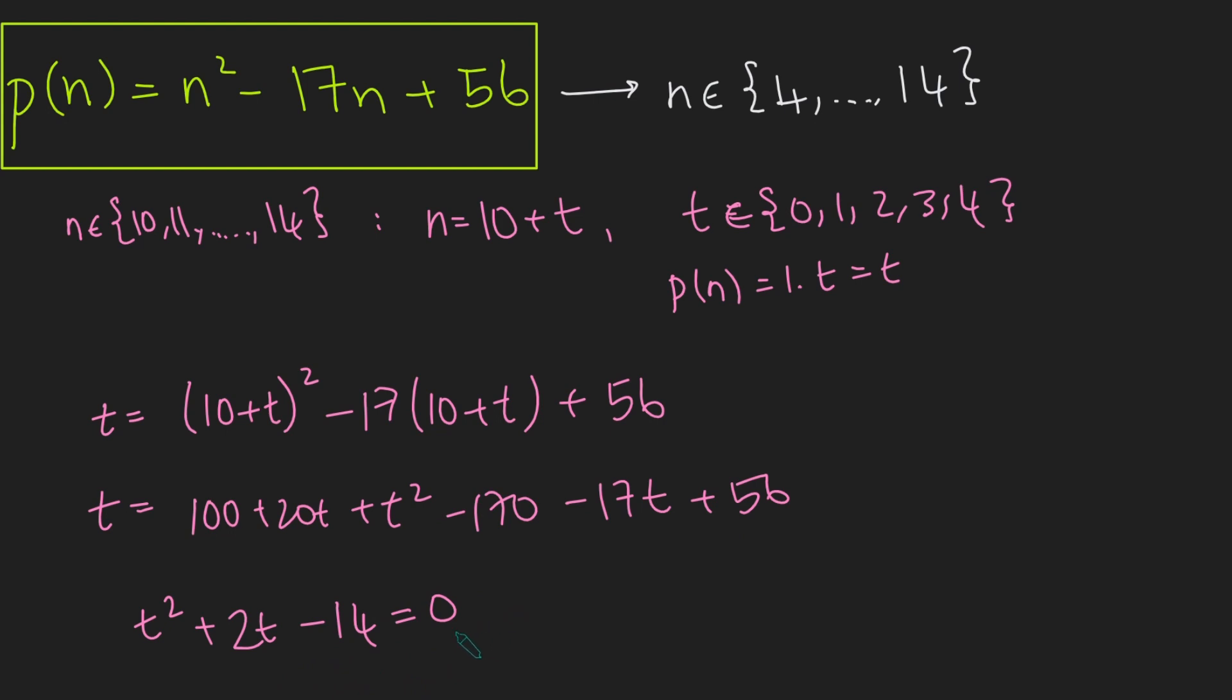And now you can try and think about factorizing this. This does not factorize. And my favorite way to tell if a quadratic factorizes nicely is to look at its discriminant. So here, if we looked at the discriminant, we get b squared, which is 4 minus 4 times 1 times negative 14. So 4 plus 4 times 14. So 4 plus 4 times 14, which is 4 times 15, which is 60. And 60 is not a square number. Therefore, this quadratic does not factorize nicely. In particular, therefore, t cannot be an integer.